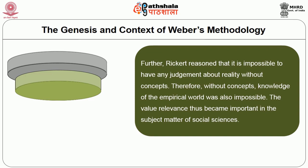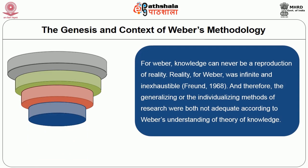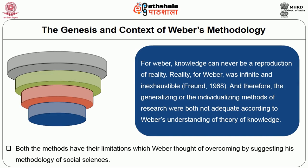The value relevance thus became important in the subject matter of social sciences. According to the principle of value relevance, knowledge was not only what was observable, but more importantly, a construction of the object to be described. For Weber, knowledge can never be a reproduction of reality. Reality for Weber was infinite and inexhaustible. Therefore, both the generalizing and the individualizing methods of research were not adequate, and both methods have their limitations, which Weber thought of overcoming by suggesting his methodology of social sciences.